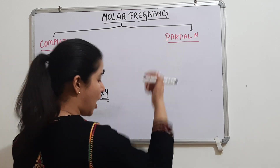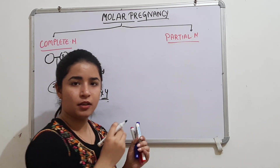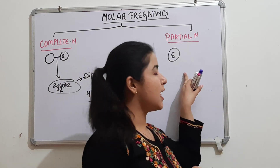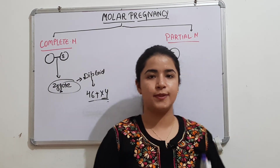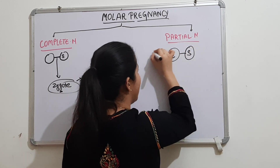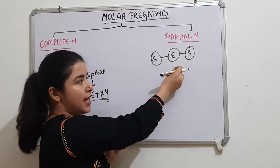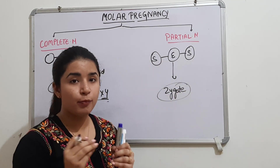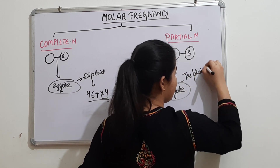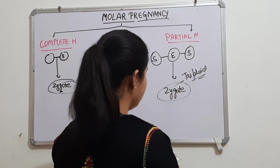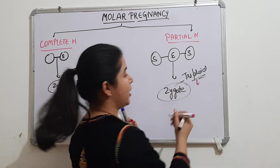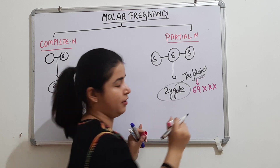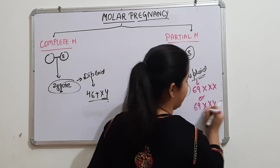In a partial mole, the egg is normal but it is fertilized by two different normal sperms. Because two sperms fertilize one egg, the resulting zygote is triploid in nature. The chromosomal representation in this case will be 69XXX or 69XXY.